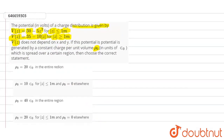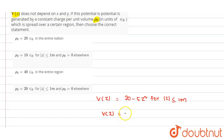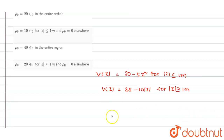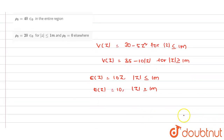The potential is V(z) = 30 − 5z² for |z| ≤ 1 meter, and V(z) = 35 − 10|z| for |z| ≥ 1 meter. From this, the electric field E(z) = 10z for |z| ≤ 1 meter, and E(z) = 10 for |z| ≥ 1 meter.